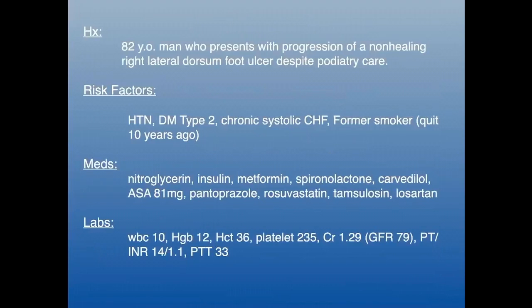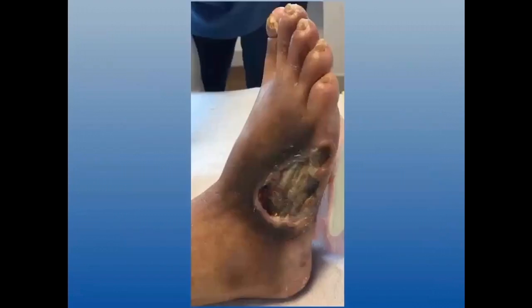Here's a quick case: 82-year-old man with CLI, large lateral dorsum foot ulcer. Despite podiatry care for quite some time, his ulcer and wound kept getting worse. He has classical risk factors — hypertension, diabetes — and is appropriately treated with aspirin, statin, insulin, and blood pressure medications. His labs are normal. On presentation you can see classic chronic ischemia: thickened nails, shiny hairless skin, discoloration, and a large wound going down to the tendons.